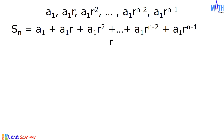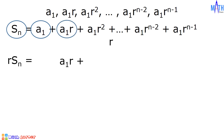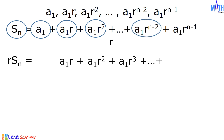Let us multiply the common ratio, which is R, to each term of this equation. S sub n times R is equal to R S sub n. A sub 1 times R is equal to A sub 1 R. A sub 1 R times R is equal to A sub 1 R squared. A sub 1 R squared times R is equal to A sub 1 R cubed. All the way to A sub 1 R raised to n minus 2 times R is equal to A sub 1 R raised to n minus 1. And the last term, A sub 1 R raised to n minus 1 times R is equal to A sub 1 R raised to n.